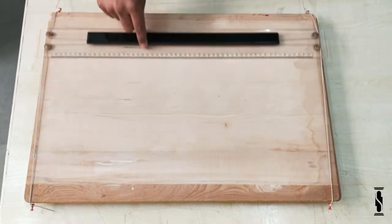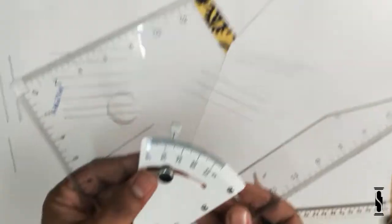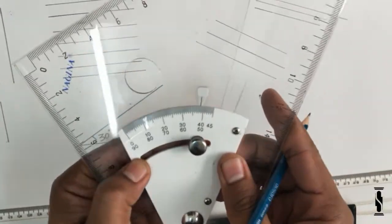In today's tutorial, we are going to learn how to use motion parallel bar and set square. So without any further delay, let's get started.